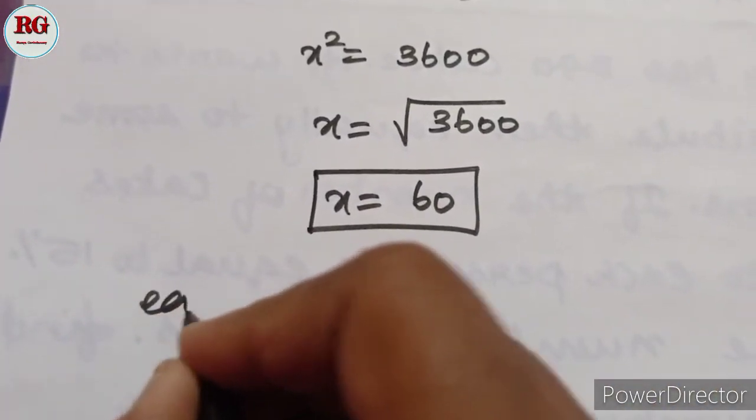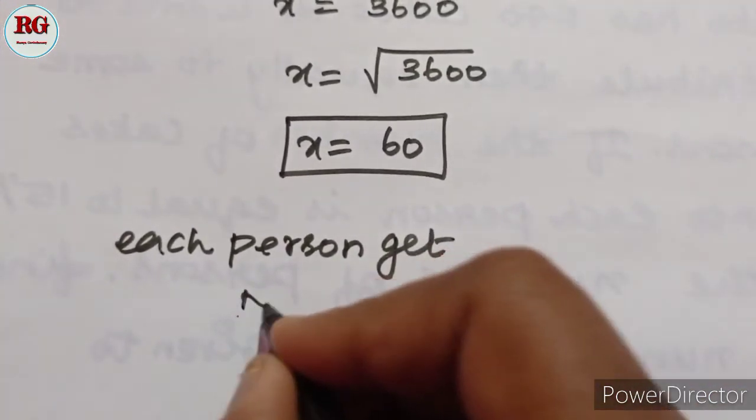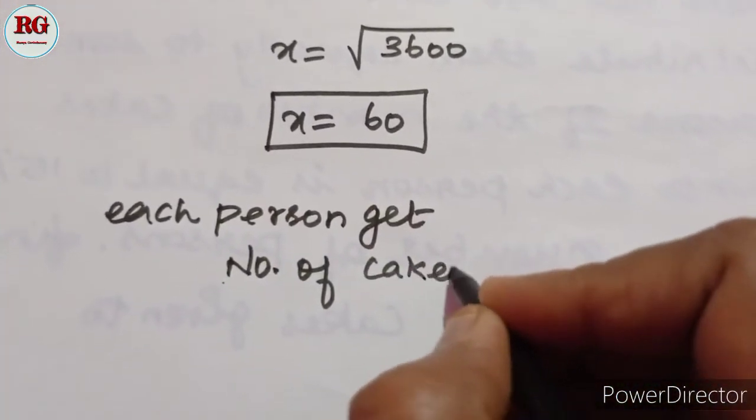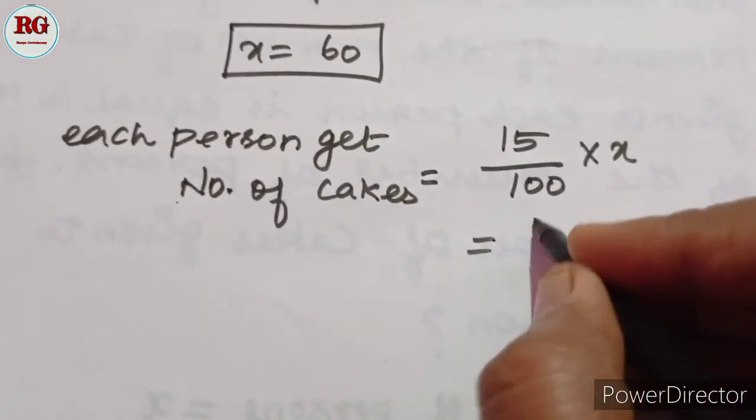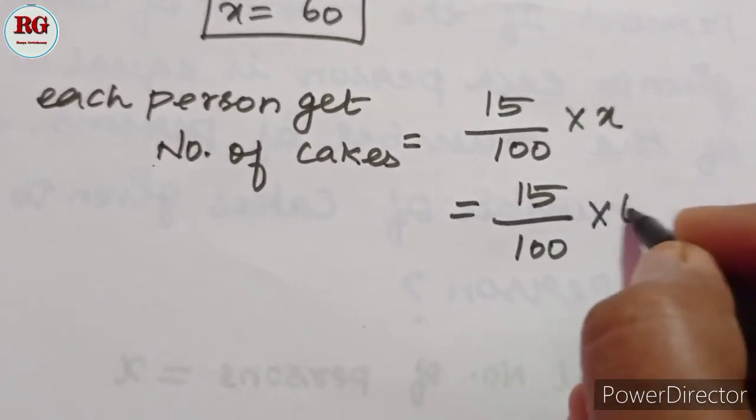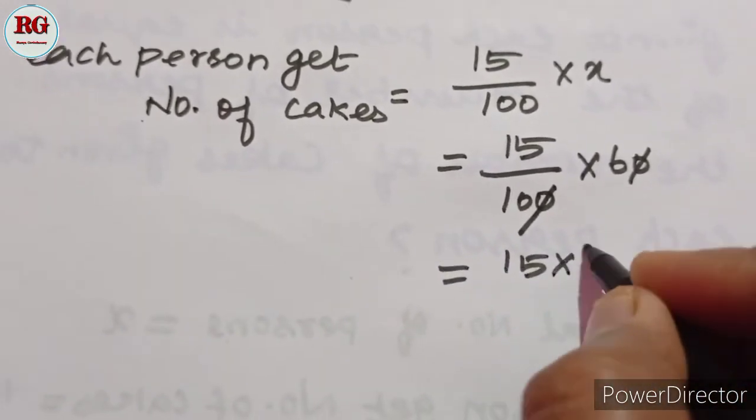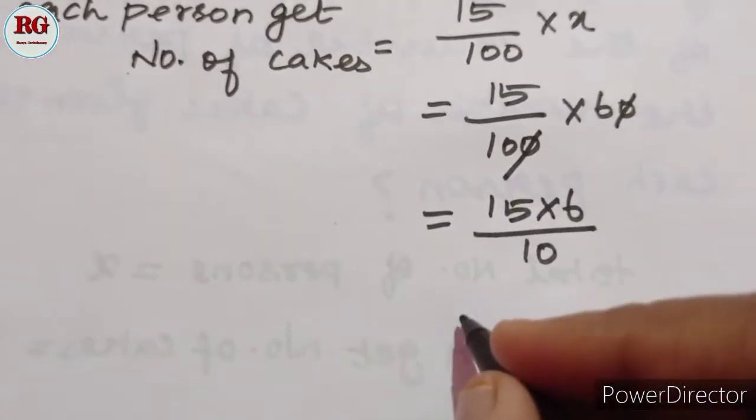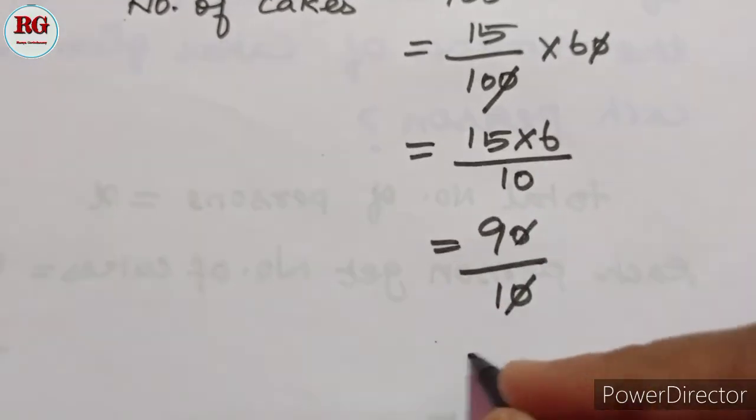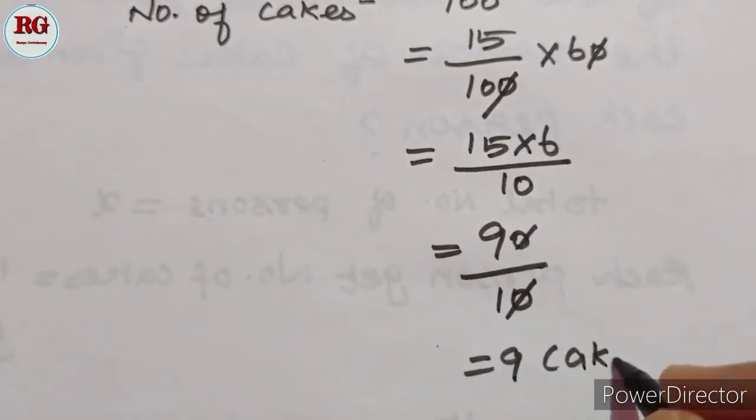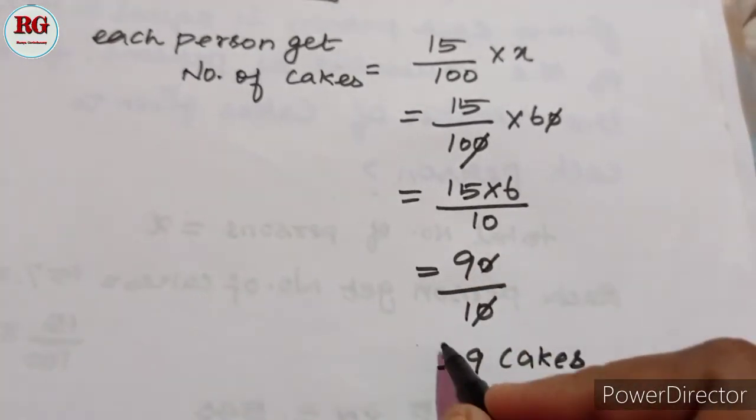Now we need to find the number of cakes each person gets. We calculate 15/100 times 60. Canceling zeros, this becomes 15 times 6 divided by 10. 15 times 6 is 90 divided by 10 equals 9. So each person gets 9 cakes. This is the answer.